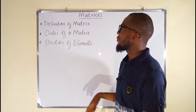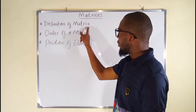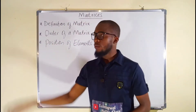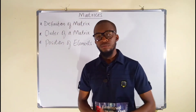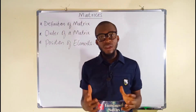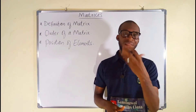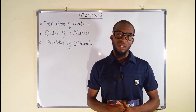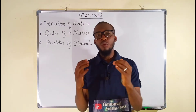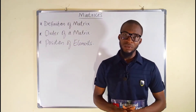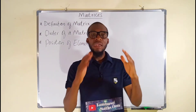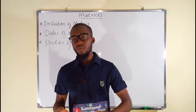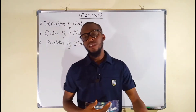Let us begin with the first one: definition of a matrix. Matrix is just the singular form of matrices, while matrices is the plural form. A matrix is a rectangular arrangement of elements — these elements could be numbers or even characters — arranged in a particular number of rows and columns. A matrix is represented by an uppercase letter, while the elements are denoted by lowercase letters when dealing with variables.